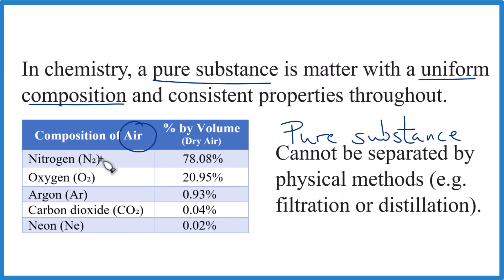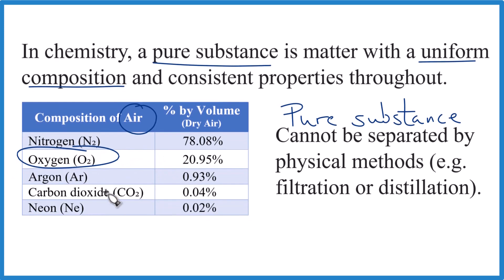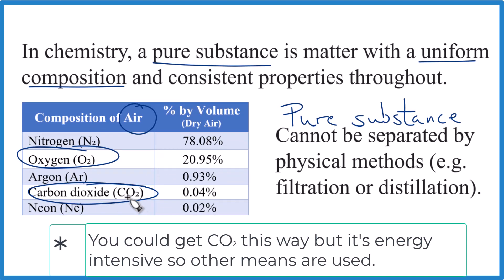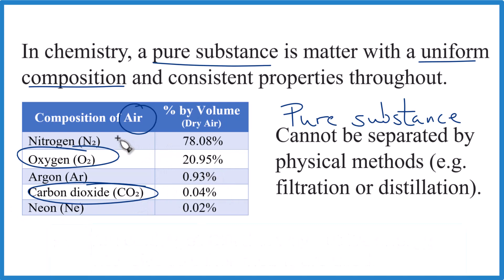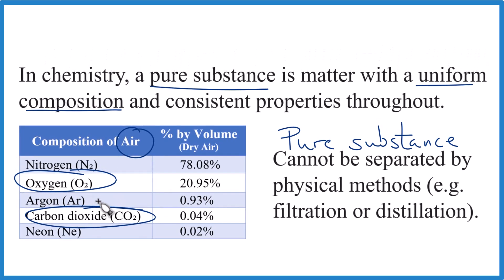In air, it can be separated out into these individual gases. That's how they get oxygen for hospitals, or carbon dioxide to make carbonated beverages. So we can separate the mixture of air out into these different gases. And for that reason, air is not considered to be a pure substance in chemistry.